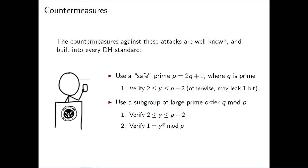The countermeasures to these small subgroup attacks have been known for decades and are written into every Diffie-Hellman standard. The first is to use a safe prime — a prime of the form P = 2Q + 1 where Q is also prime. In this case, P minus 1 only has two factors, 2 and Q, and Q is much too large to brute force. To defend against the subgroup of order 2, all you need to check is that 2 ≤ public value ≤ P-2. Alternatively, you can use a subgroup of large prime order Q, but this requires an additional exponentiation to verify the public value is in the correct subgroup.